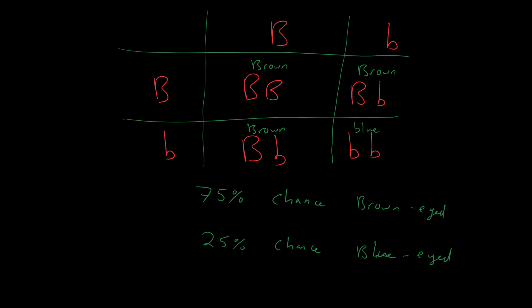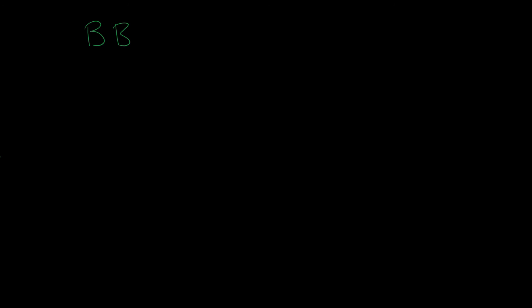For the higher paper, there are additional terms to know. If someone has two alleles of the same type — either both dominant (BB) or both recessive (bb) — we call that person homozygous. That means they have two of the same alleles.